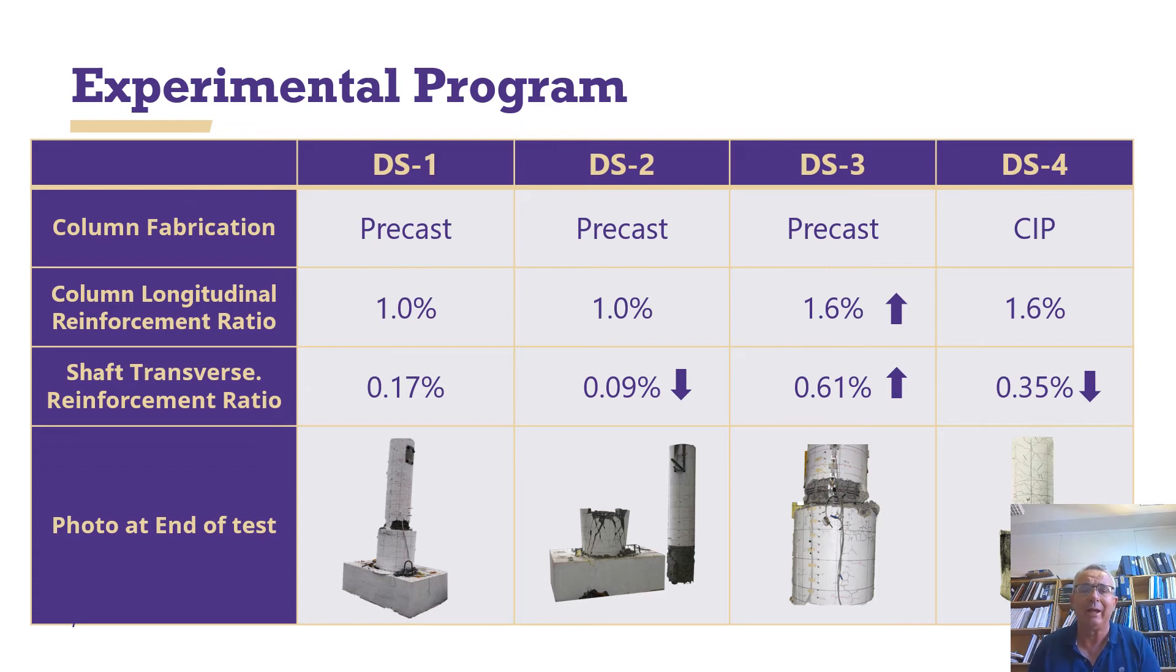And then the final one, we use a cast-in-place approach. We kept the column stronger, but then we reduced the reinforcement in the shaft about half. And again, it's the shaft that failed. So by the time we're done, we have two columns in which the column failed, and we have two specimens where the shaft failed.